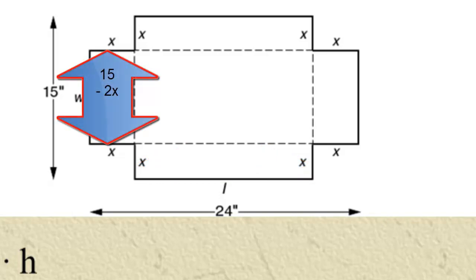Similarly, the width of the box is 15 inches less 2x's cutout. And the height, when you fold up the sides, is going to be x.